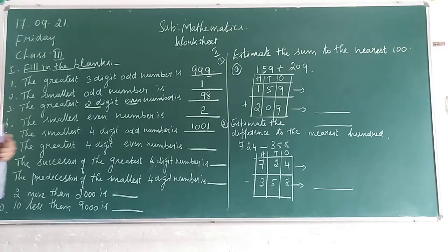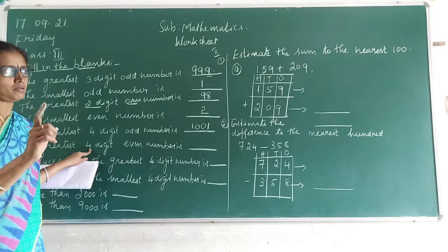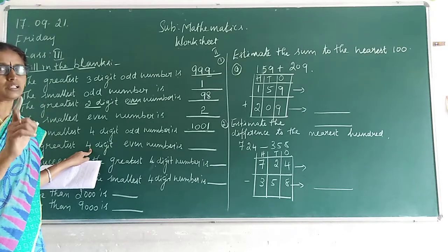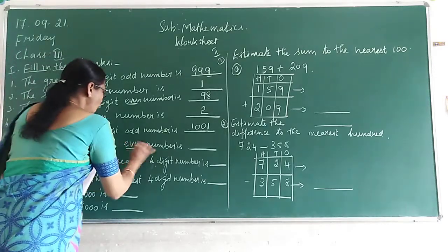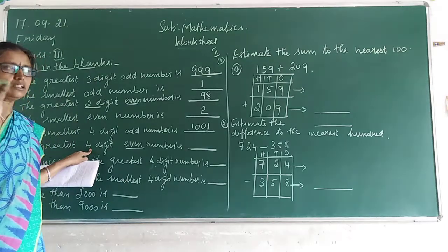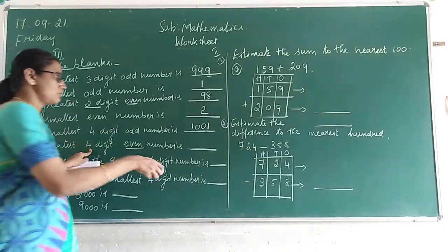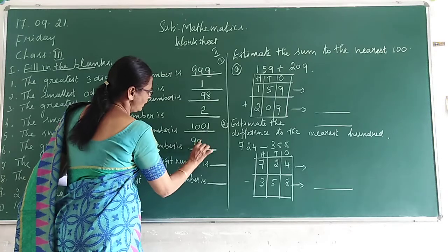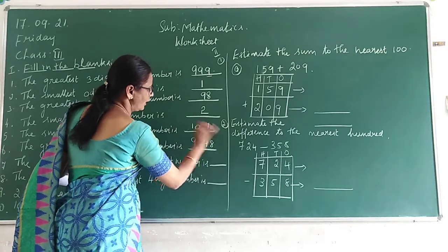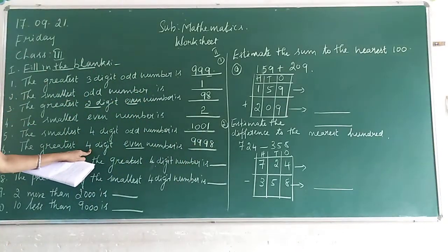Next step: the greatest 4-digit even number. The greatest 4-digit number is 9999, but the question asks for the greatest 4-digit even number. So the answer is 9998. This is the greatest 4-digit even number.